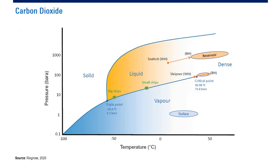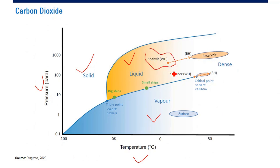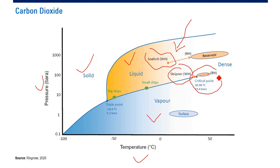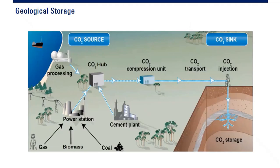This is another depiction of the phase diagram showing pressure and temperature. Here: solid, vapor, liquid. One of the most popular reservoir fields is Snøhvit and Sleipner, and they operate in liquid form. At this pressure and temperature, the CO2 will be in liquid form, or in critical condition for Sleipner.